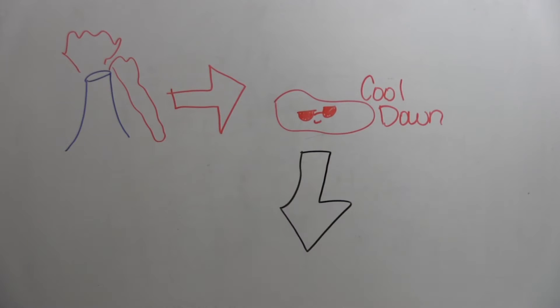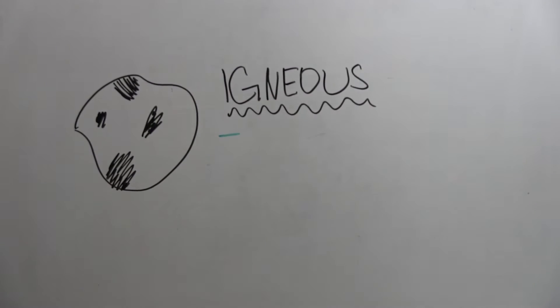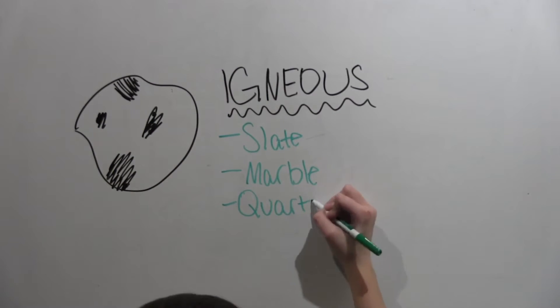Igneous are formed from when a volcano erupts and the magma cools. That cooled magma is igneous rock. Slate, marble, and quartzite would all be igneous rocks.